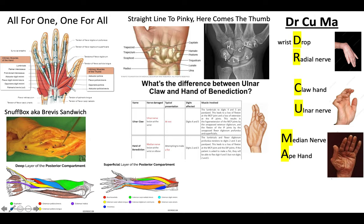The 'all for one' is the Abductor Pollicis Brevis. The 'F' for 'all for one' is the Flexor Pollicis Brevis. And the 'O' is the Opponens Pollicis. Like the phrase says, you should follow the order 'all for one.' And then bringing it over to the pinky side, you can see the Opponens for the 'one,' the Flexor Digiti Minimi for the 'for,' and finally the Abductor here for the 'all.'